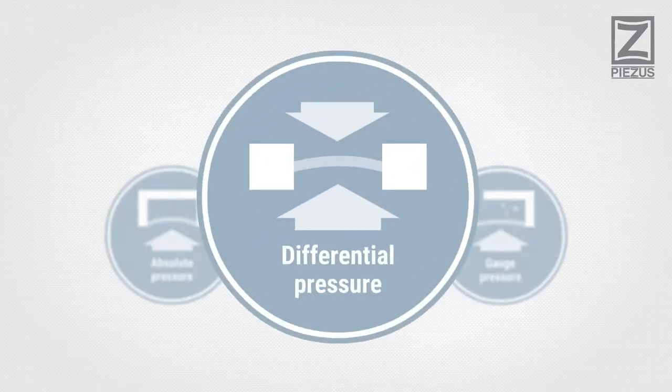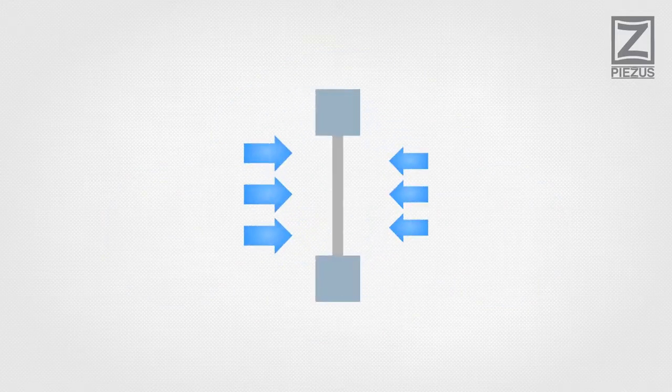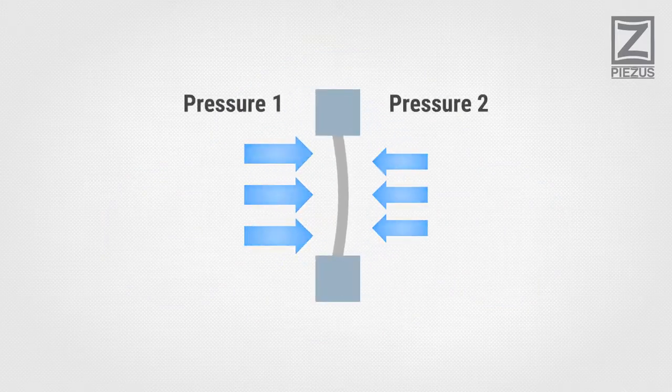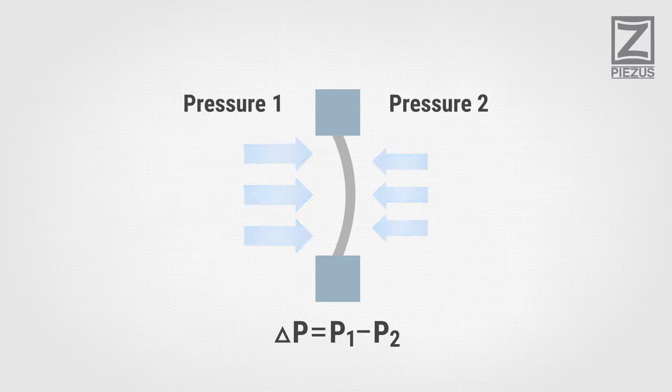Measuring Differential Pressure. Differential pressure is the difference between pressures applied to the opposite sides of the diaphragm.